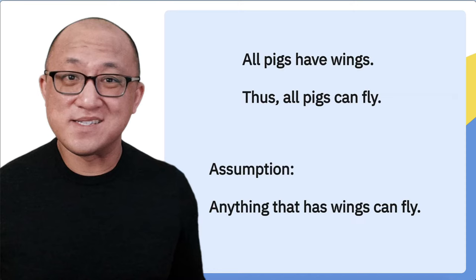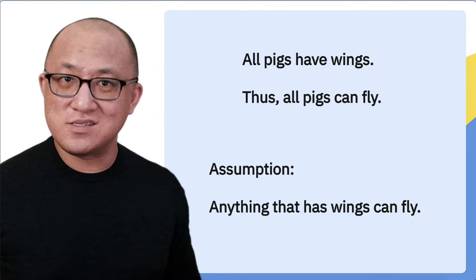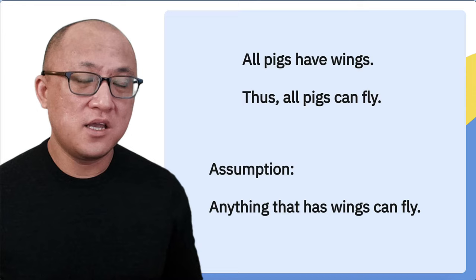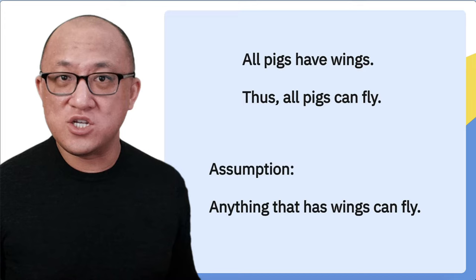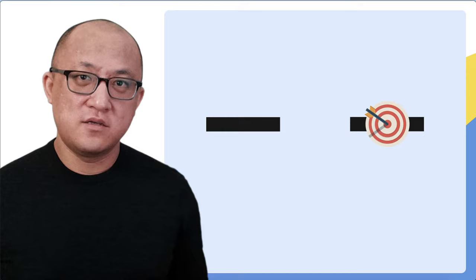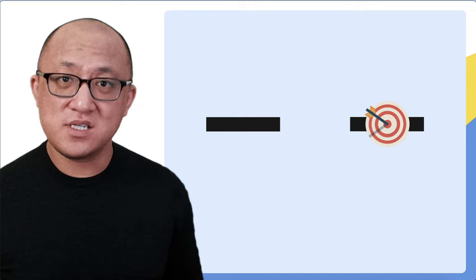The way you evaluate what is necessary is to ask: if it were not true, would the argument's premise still support the conclusion? In this case, if it were not true that anything that has wings can fly, this premise would not support the conclusion anymore. We would need to provide more information, more evidence, more premises to prove that pigs can fly. A visual might help reinforce the idea that assumptions can be both sufficient and necessary for the argument to be valid.